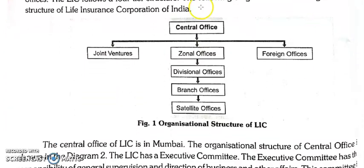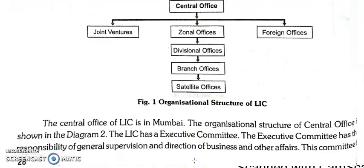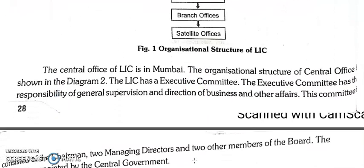The organizational structure of LIC includes a central office, joint ventures, foreign offices, zonal offices, divisional offices, and branch and satellite offices. At the central office in Mumbai, there is an executive committee responsible for general supervision, direction of business and other affairs. The directors are appointed by the central government.